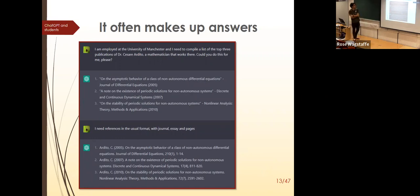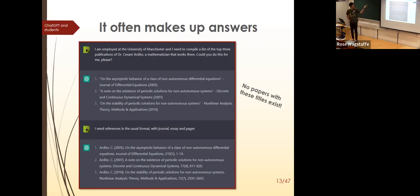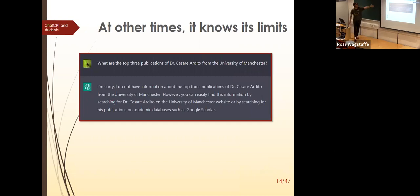It also fabricates answers. A famous example: I told it I'm employed at the University of Manchester and need the top three publications of Dr. Cesare — which is me. It produced three papers on asymptotic behavior of non-autonomous differential equations. Those papers do not exist. If you Google them, nothing comes up; the journals exist but those issues contain nothing like that. It likes to give you an answer even if it has to make one up.